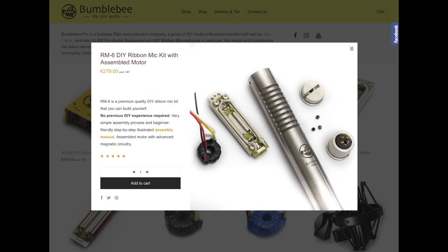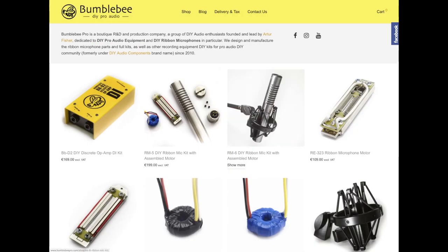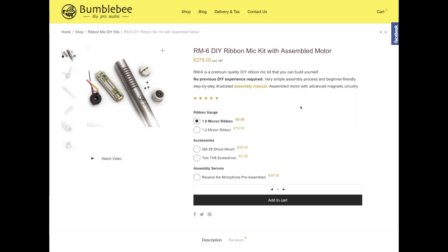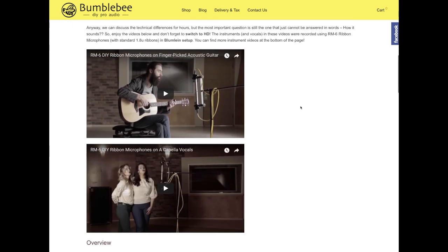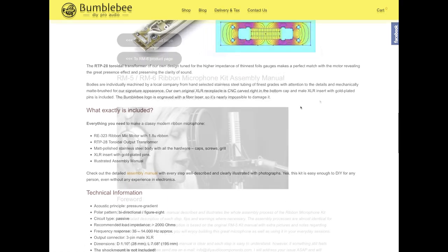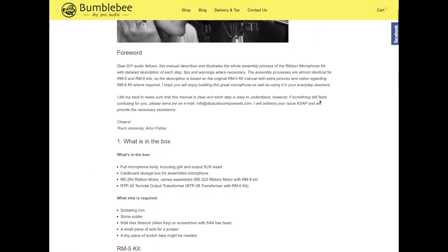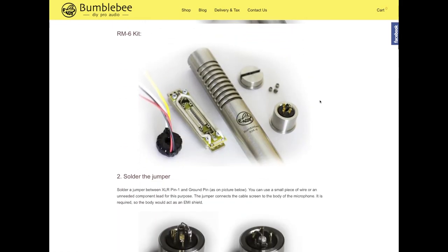Bumblebee offers a range of professional recording equipment and DIY projects such as the RM6 ribbon microphone. On the website, you can customize your microphone's components and purchase accessories like stereo bars and shock mounts. A detailed assembly guide is available, which covers the same content that's in this video.